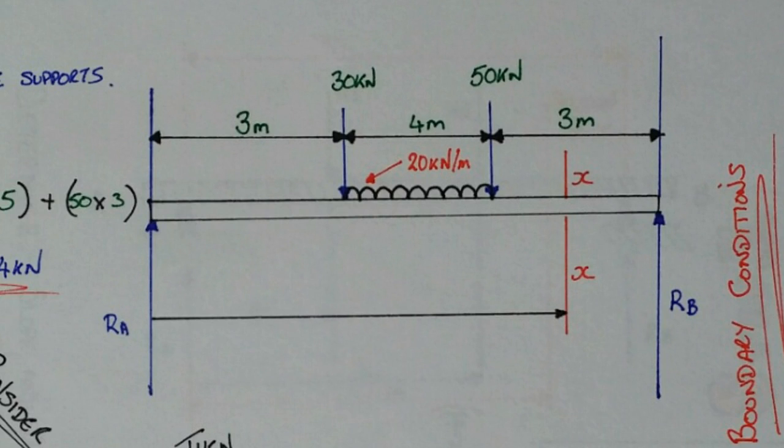In using the Macaulay ramp function for a uniformly distributed load we start from point A. This is just an arbitrary distance from the zero datum. We did this in order to comply with the requirements of the function. We then made the assumption that the UDL continued to the right hand extremity of the beam. Now this has two consequences when we use the Macaulay's method.